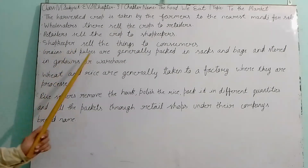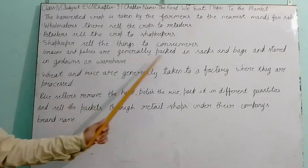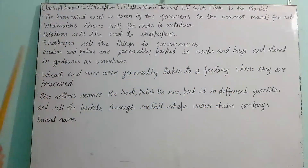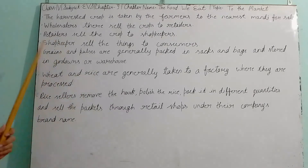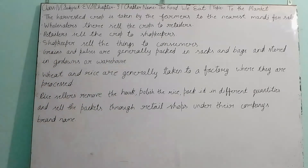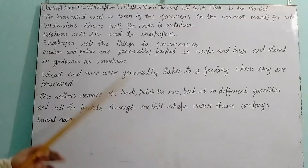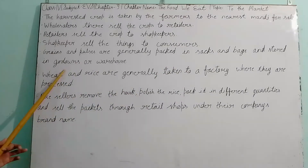Grains and pulses are generally packed in sacks and bags and stored in godans or warehouses. These can be directly sold to consumers, or they are packed in sacks and bags and stored in godans and warehouses before being sent onward.